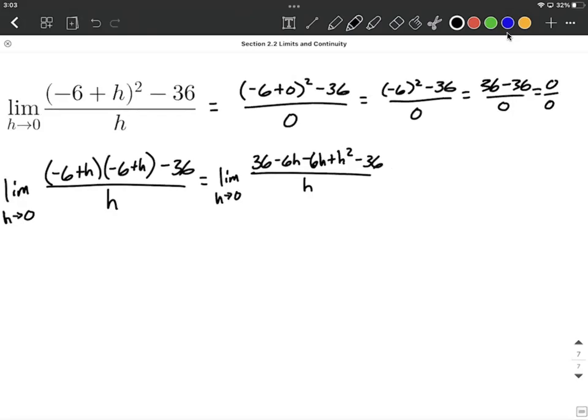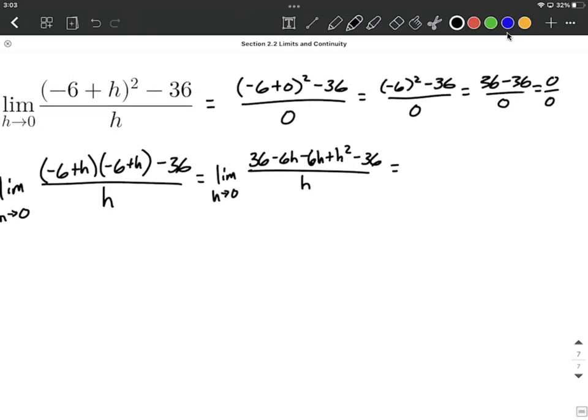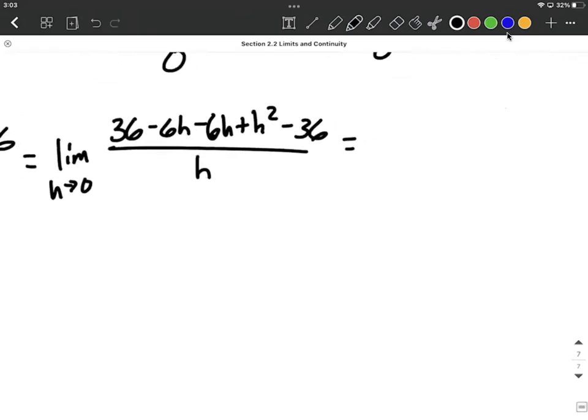All right, we should be able to reduce a little bit for what we have in our numerator. So I'll bring the limit along again, the limit as h approaches 0. We do have some like terms. We have 36 minus 36 that can combine together. We have negative 6h minus 6 more h's makes negative 12h's. Bring along the plus h squared, and we still have that h in the denominator.